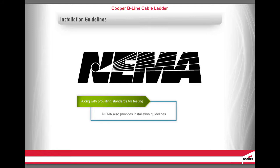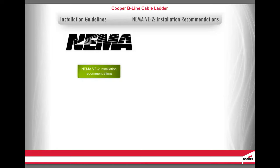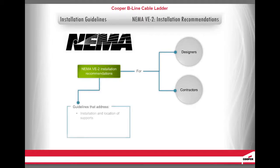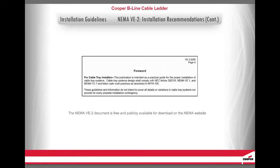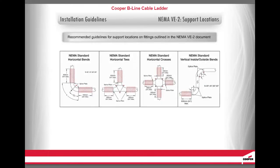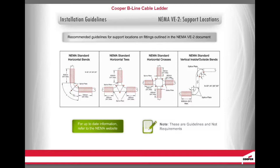Along with providing standards for testing, NEMA also provides installation guidelines. The NEMA VE2 installation recommendations are for designers and contractors. They are guidelines that address installation and location of supports, field modifications, grounding and bonding, as well as handling and storage. The NEMA VE2 document is free and publicly available for download on the NEMA website. Here are the recommended guidelines for support locations on fittings outlined in the NEMA VE2 document. For the most up-to-date information, refer to the NEMA website. Note: these are guidelines and not requirements.